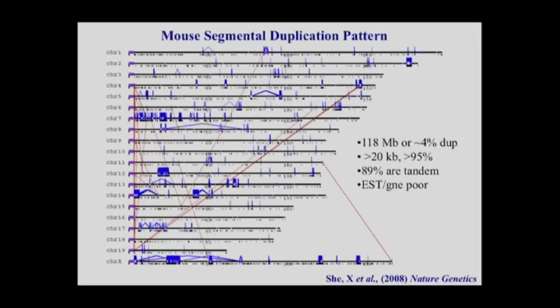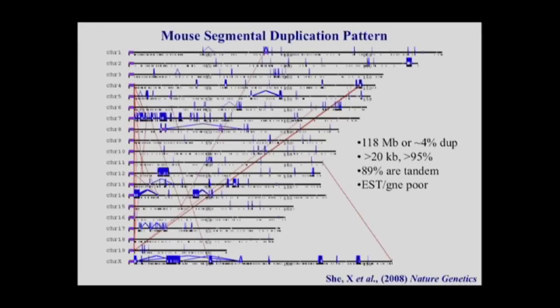How does this compare to other organisms? The best sequenced genome other than human is the mouse genome — specifically the C57 black 6 strain. The pattern of recent duplications at the exact same sequence identity and size shows that the mouse genome has about the same proportion of recent duplications, although the sequences are completely different since they're all evolutionarily young. But the pattern is very different from human: very few inter-chromosomal duplications, and the intra-chromosomal duplications are essentially right on top of one another. In the mouse, most duplications have evolved in tandem, while in humans and great apes the vast majority are interspersed.